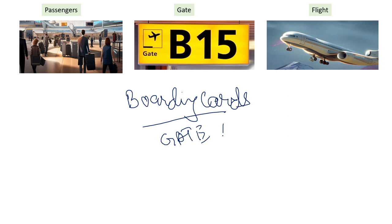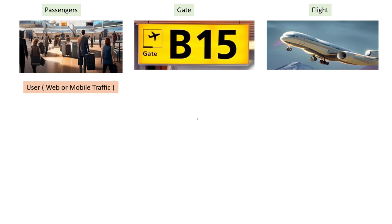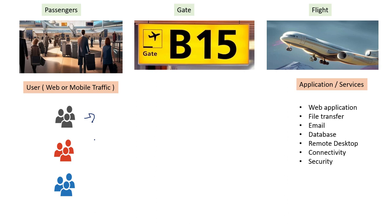It can be B15, A30, or whatever. Now let's try to map this with ports and understand how it works. Our passengers are the same as our web or mobile traffic. Different passengers want to go to different flights, just like we want to call different services. We have different applications — exactly like different flights — such as a web application, file transfer application, email services. And then we have ports: how to access those services, just like going to a specific gate to catch a specific flight.